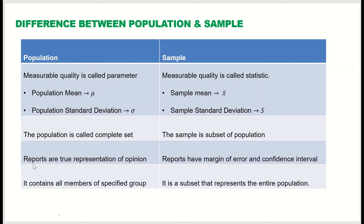In the case of population, the reports are a true representation of opinion about the population. Whereas in the case of sample, reports have a margin of error and a confidence interval. When reporting using a sample, the mean has a margin of error of plus or minus something, or we give an interval and say that the true mean lies within this interval at a certain confidence level.